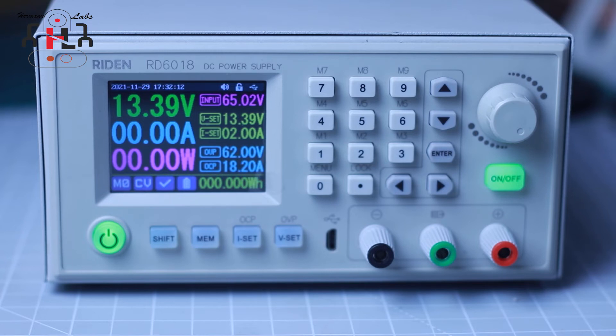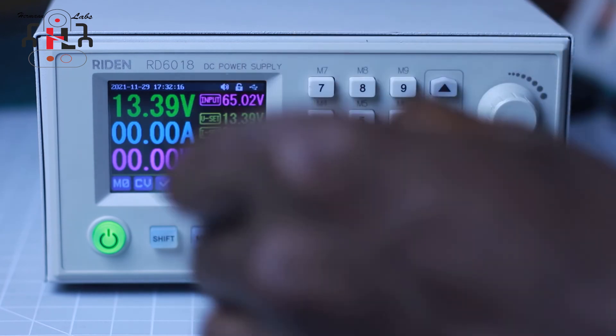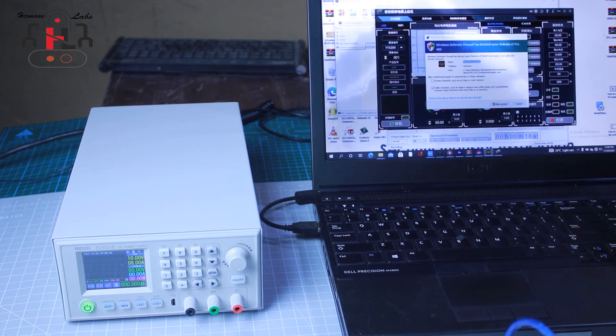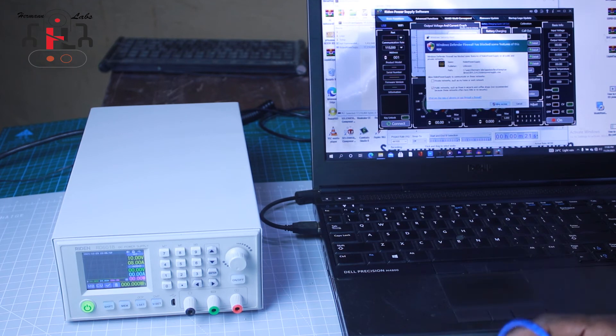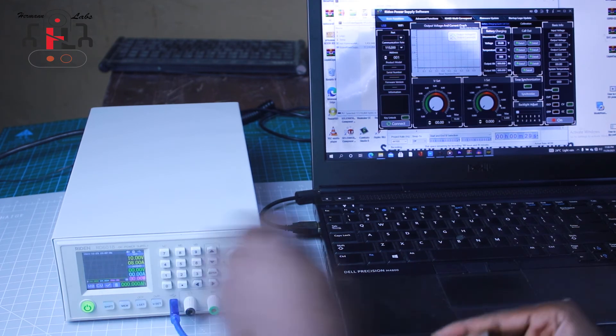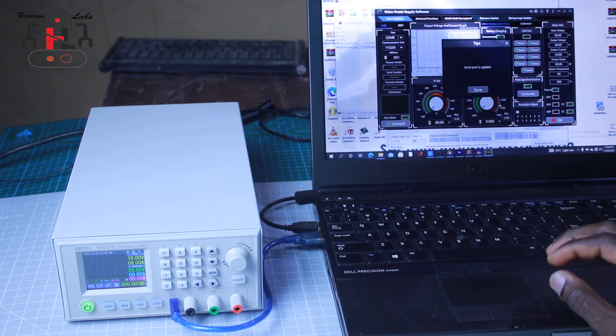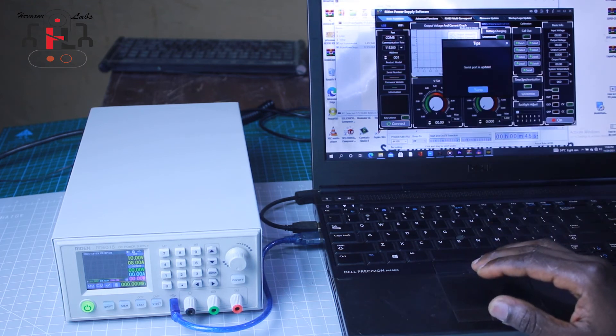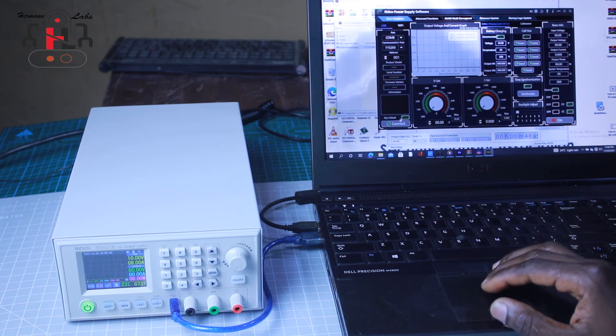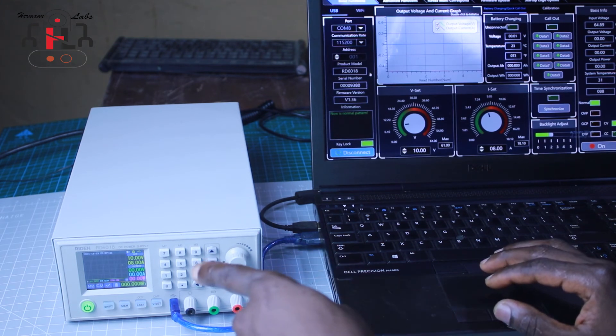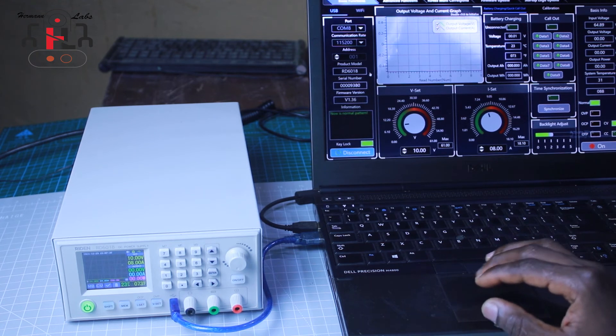So the other cool thing we can do with this device is that we can control it with the computer. To do that, we just go to the Raiden website and download this software and open the application. And then we connect the USB cable to the power supply and then to the PC USB port. After that is connected and the serial port where the USB connector is connected is indicated, we now click here to say sure. Serial port is updated. So the next thing we do now is to connect. So after connecting now, you see that we have control over this power supply from our computer, from the PC.